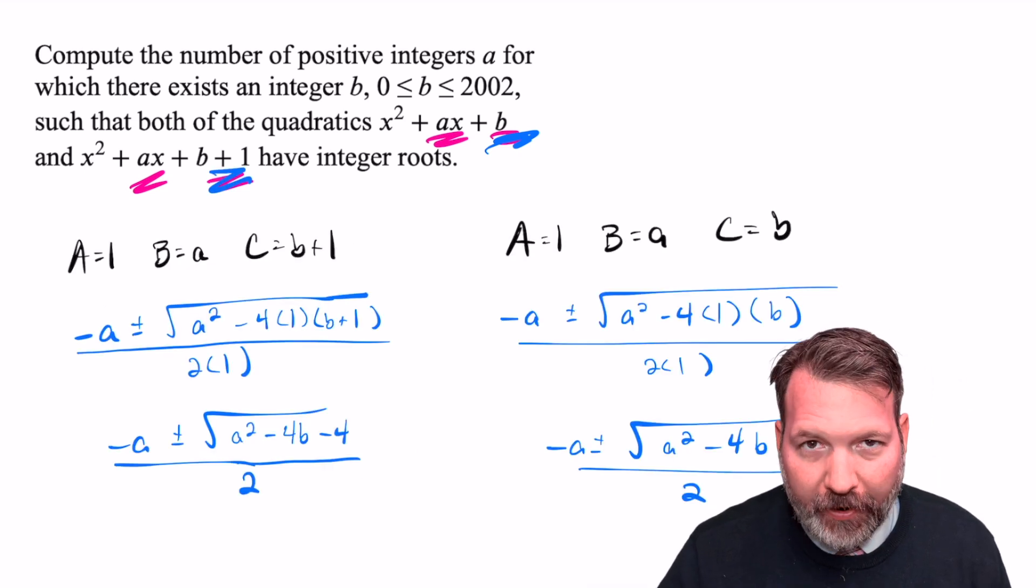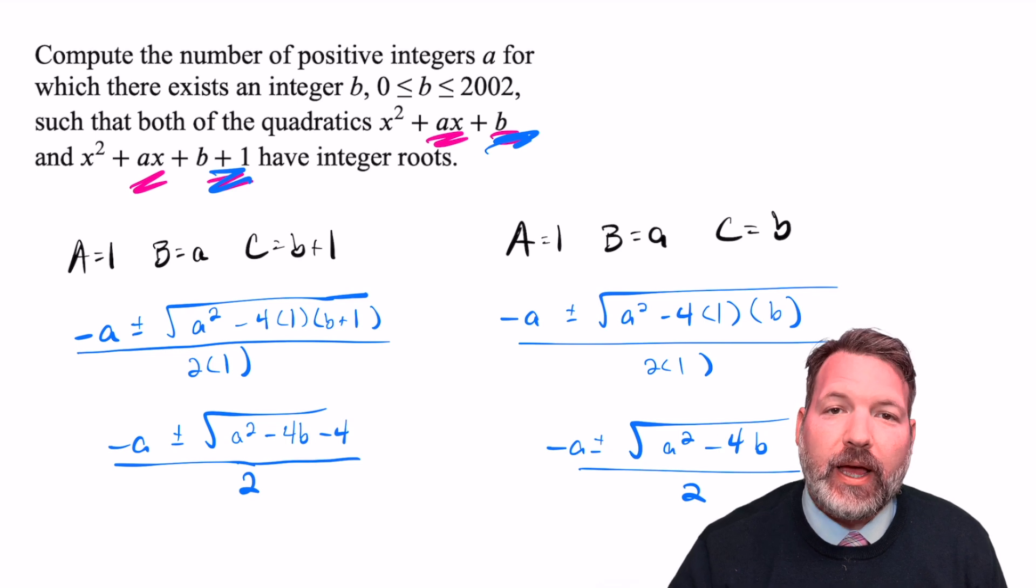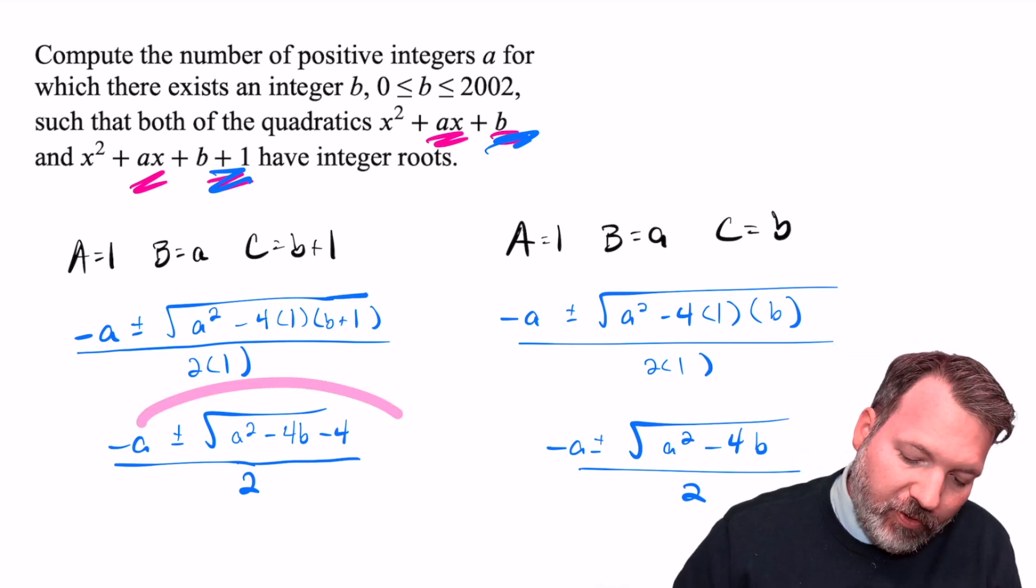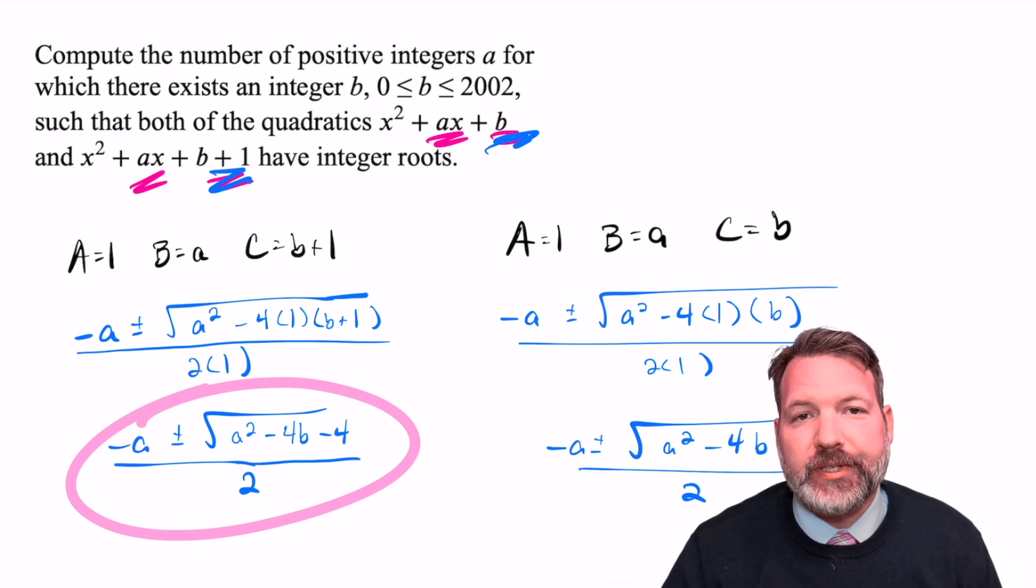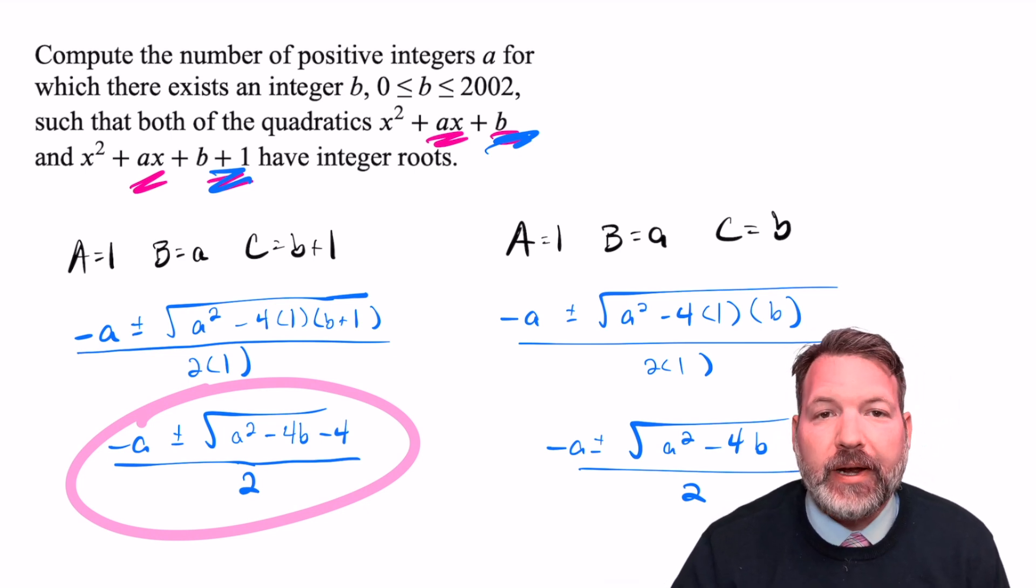Once we take care of the weird variable stuff, however, this is what we get after we plug it into the quadratic formula. The roots of the B + 1 quadratic will be represented by negative A plus or minus the square root of A² - 4B - 4 all over 2.